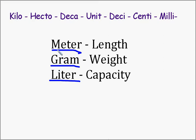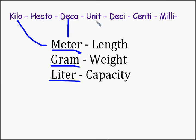Now, we can take that meter and change our measurement tool by adding prefixes to it, like kilo for a kilometer. Kilo means thousand, so a kilometer is a thousand meters. Hecto for a hundred. Deca for ten, so a decameter is ten meters.